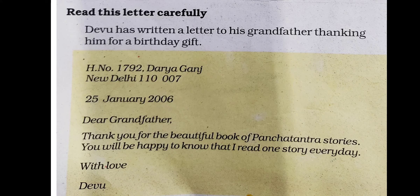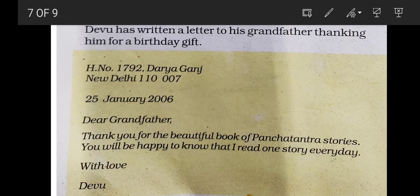This is called the from-address — it is the address of the sender. After that, the date. Always when we write letters, the date should always be written in full form like this: 25th January 2022. If you are writing now, this is the year 2022, so you will write 22 here. Then you write to whom you are writing.